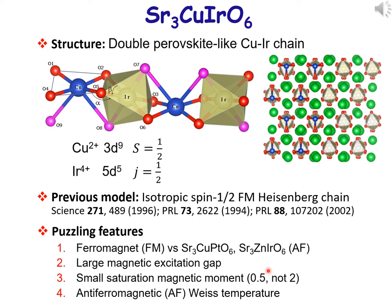Now, let's look into this mixed 3D and 5D oxide, whose key structural feature is chains with alternating copper and iridium atoms. This quasi-1D material is strange because: first, the magnetic order is ferromagnetic, in sharp contrast with the anti-ferromagnetic order in the isostructural cuprate and iridate. Second, a Raman measurement revealed a large gap in its magnetic excitation spectrum, in disagreement with the previous gapless Heisenberg model. Third, the saturation magnetic moment is much smaller than expected for a ferromagnet. Last but not least, this ferromagnet exhibits an anti-ferromagnetic Weiss temperature.